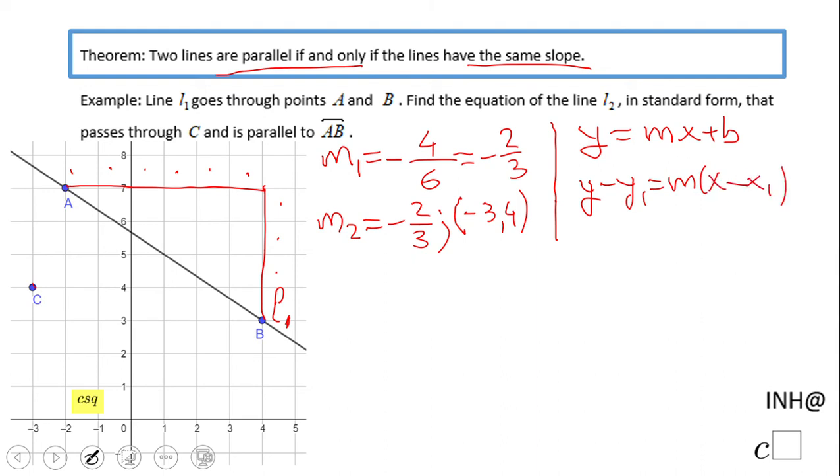We're going to have y - 4 (this is y₁) equals m times the slope we found, negative two-thirds, and then x minus negative 3 (this is x₁).